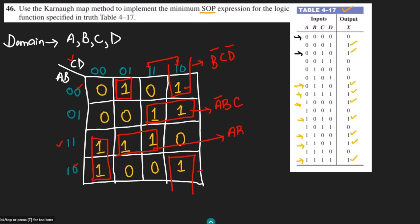For the next group, AB = 11 is not changing since it's the same row, so I write AB. The other bit D = 1 is also not changing, so I add D, giving ABD. For the lone 1 in the same column, CD = 00 is not changing, so I write C'D'. Since A = 1 is also constant there, the full term is AC'D'. The last isolated 1 has the binary combination 0001, giving A'B'C'D.